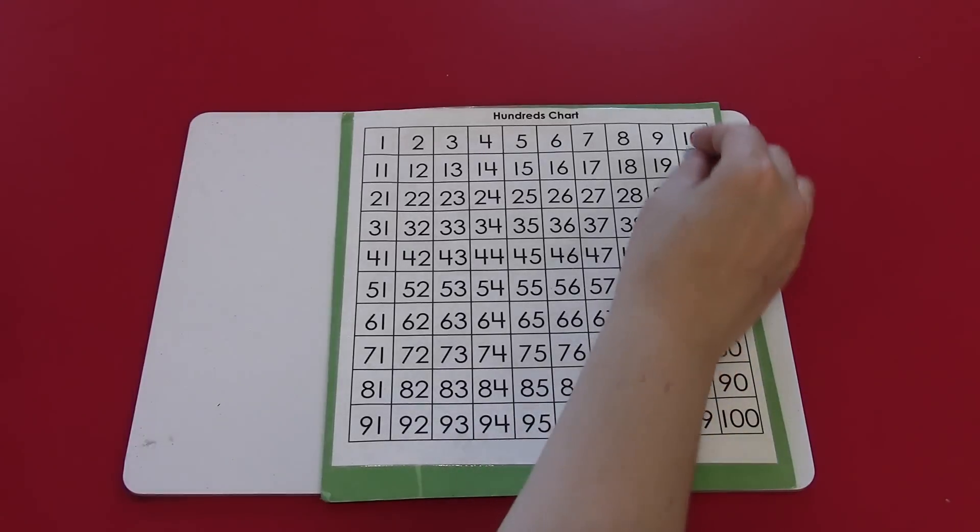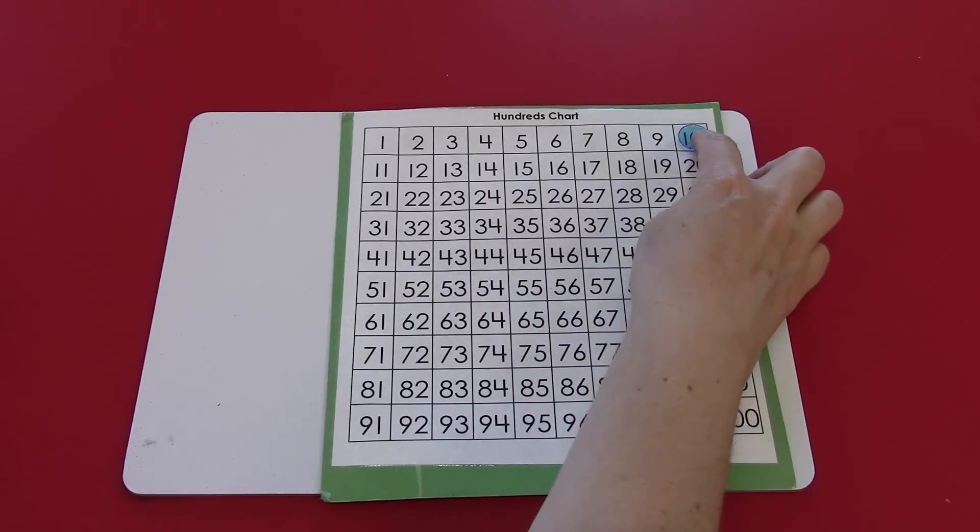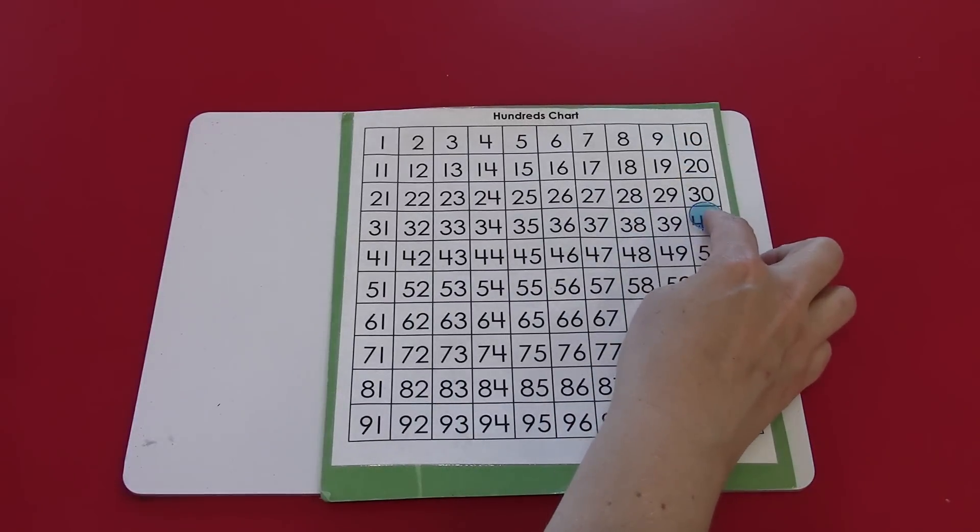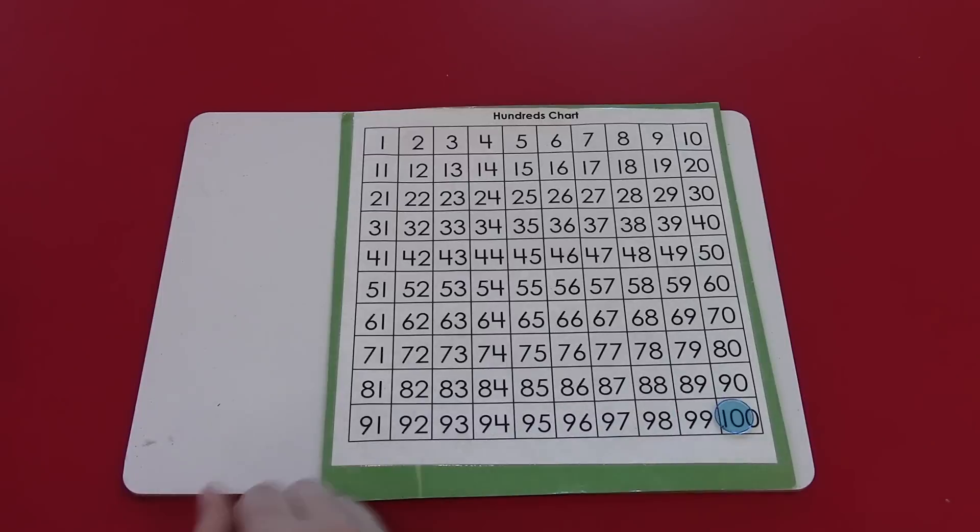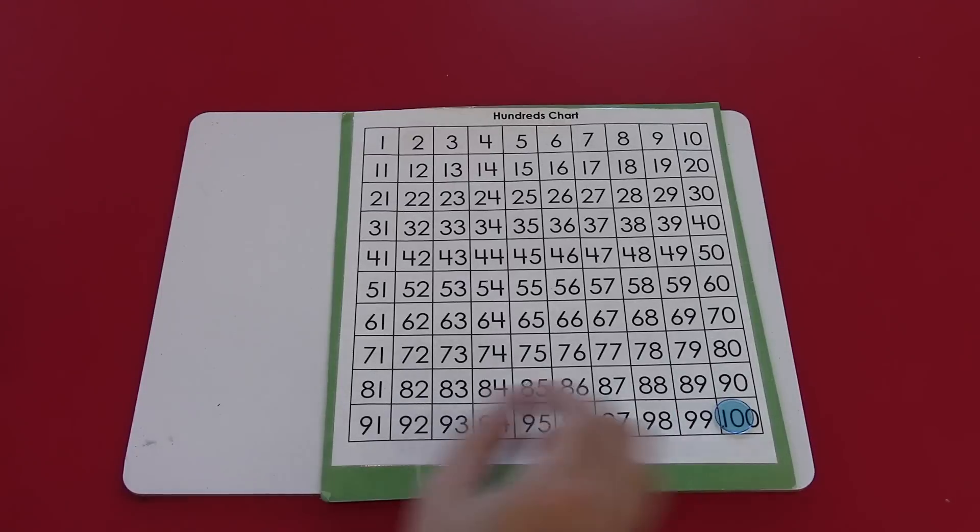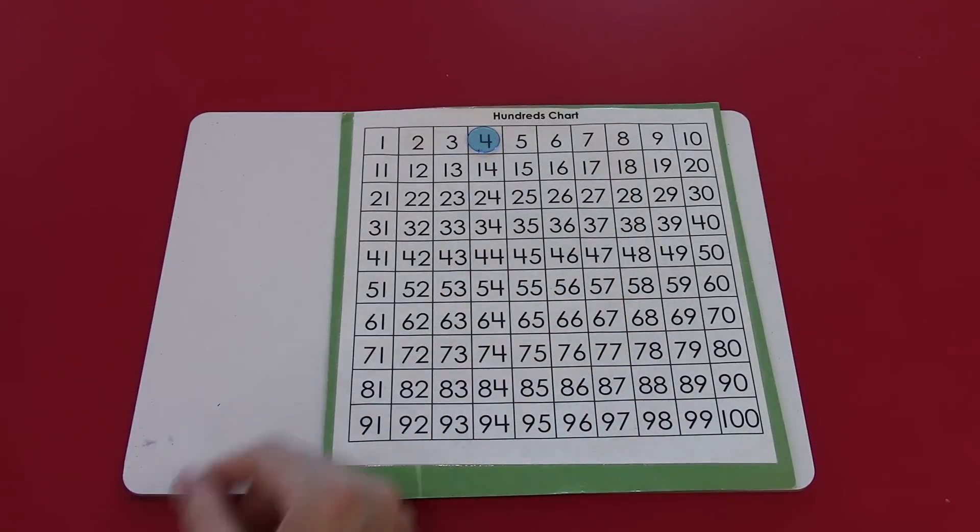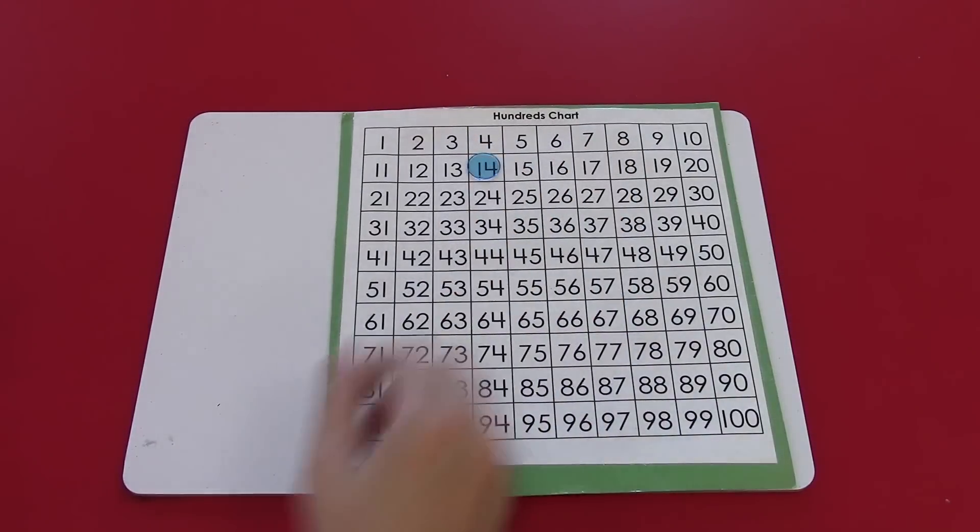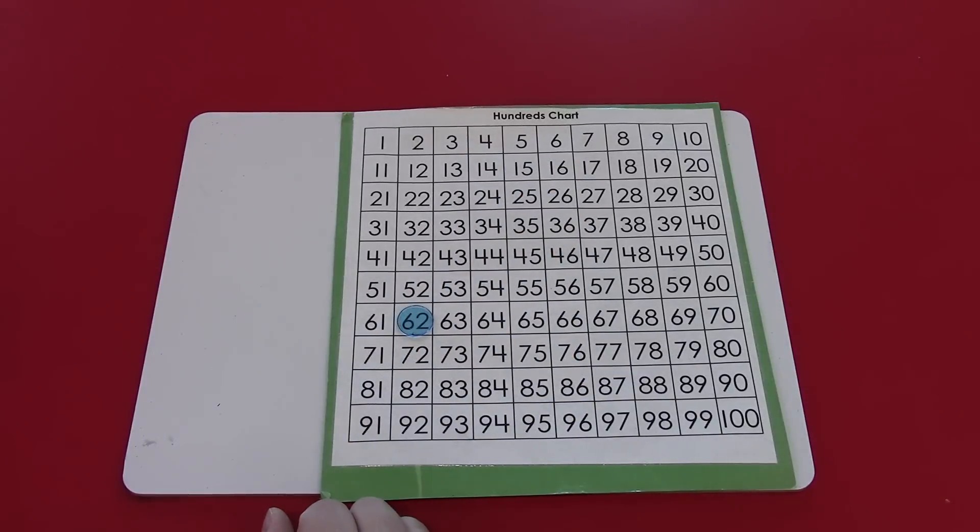When we go down on the hundreds chart we get bigger by 10. Ten, twenty, thirty, forty, fifty, sixty, seventy, eighty, ninety, one hundred. And again that works anywhere on the hundreds chart. 4 plus 10 is going straight down, 14. 62 plus 10 straight down, 72.